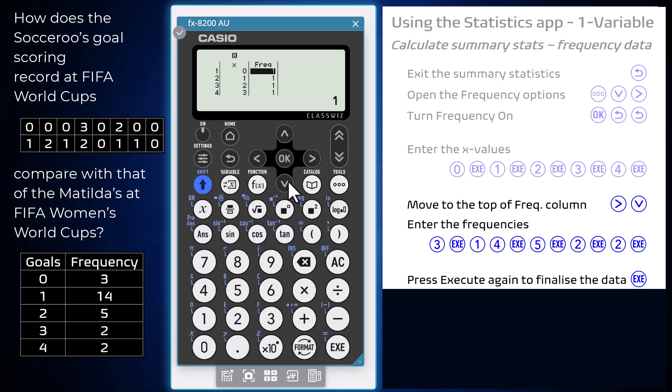Now enter the frequencies, being 3, 14, 5, 2 and 2, with entries separated by execute.